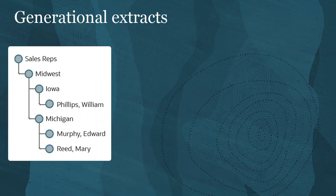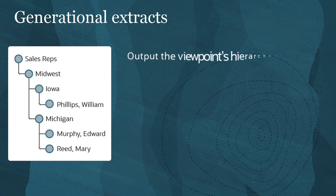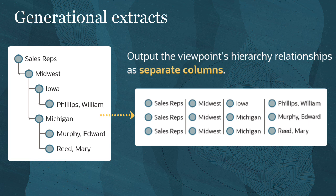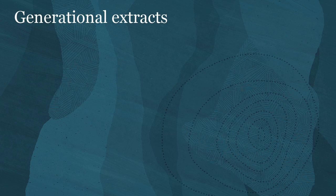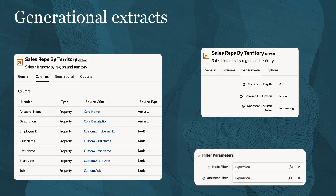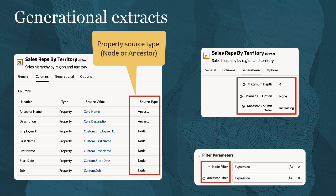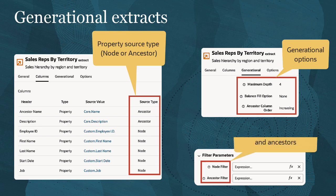Incremental extracts are not available for time-labeled viewpoints. Generational extracts are available for hierarchy viewpoints. These extracts output the viewpoint's hierarchy relationships as separate columns in the extract, instead of parent and child columns as in the other extract types. When you create generational extracts, the system gives you extra options to control your output content — for example, whether you are extracting a property for a node or its ancestors, how many hierarchy levels to include, and separate filters for nodes and ancestor nodes.